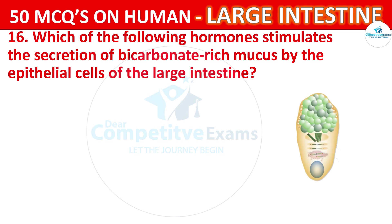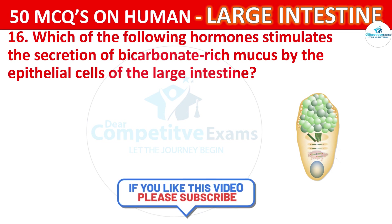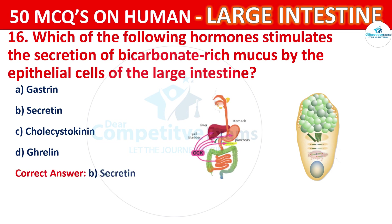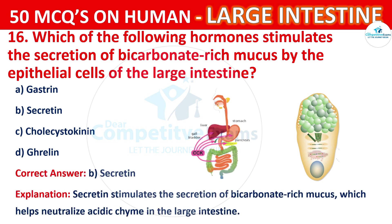Which of the following hormones stimulates the secretion of bicarbonate-rich mucus by the epithelial cells of the large intestine? The correct answer is B, that is Secretin. Secretin stimulates the secretion of bicarbonate-rich mucus, which helps to neutralize acidic chyme in the large intestine.